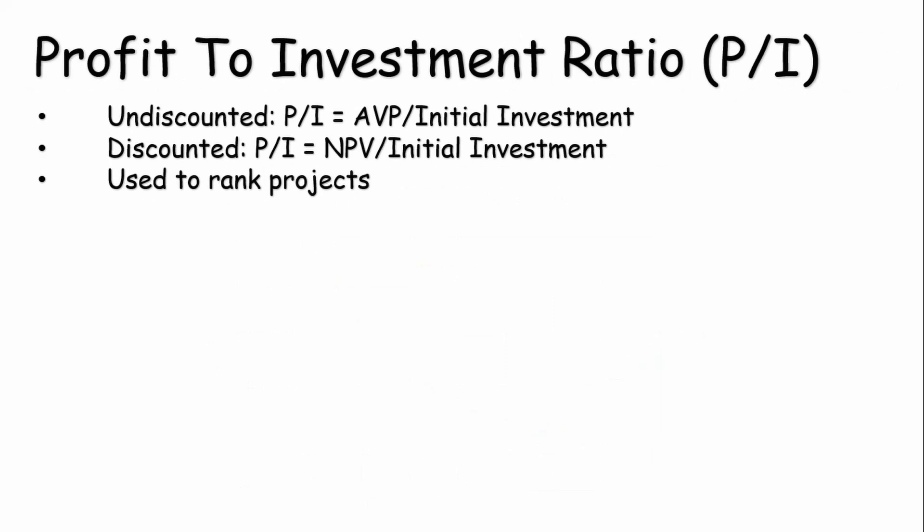The next economic yardstick is profit to investment ratio, which is used to rank projects. There's an undiscounted and a discounted version. In the undiscounted case, you calculate your average value profit and divide by the initial investment. In the discounted case, you use your net present value divided by the initial investment. The best way to understand profit to investment ratio is to work through a simple example.